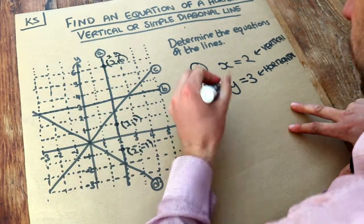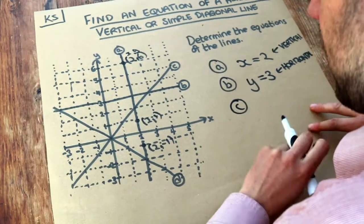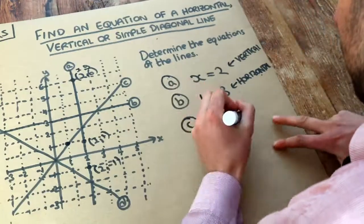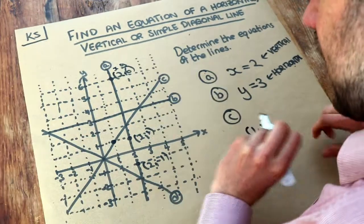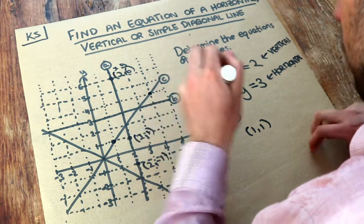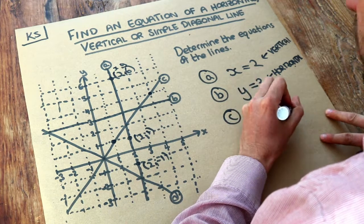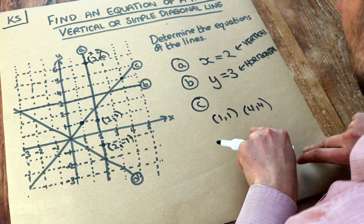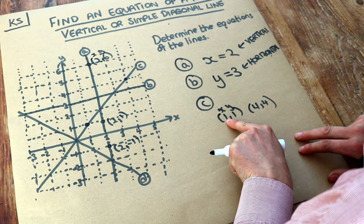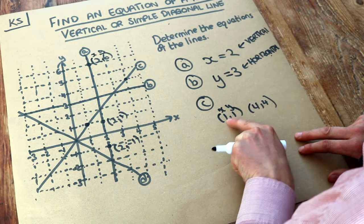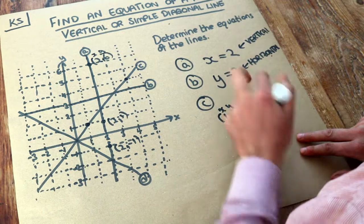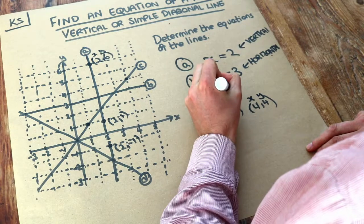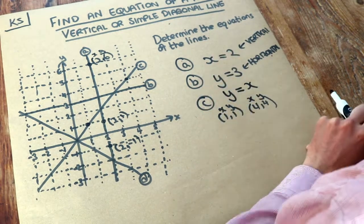Lines C and D are a bit more complicated. Let's look at some points on line C. If we take this point here, that's (1, 1). Let's take another point on C — we've got (4, 4). The x value is not always the same, and the y value is not always the same, but the y value is the same as the x value. The y value of 4 is the same as the x value of 4. So we can write this equation as y equals x, because the y value is the same as the x value.